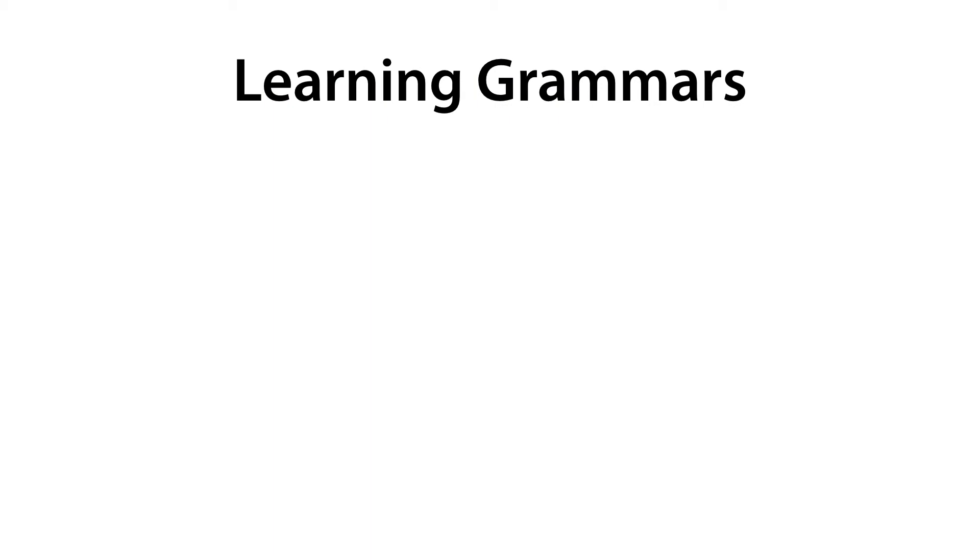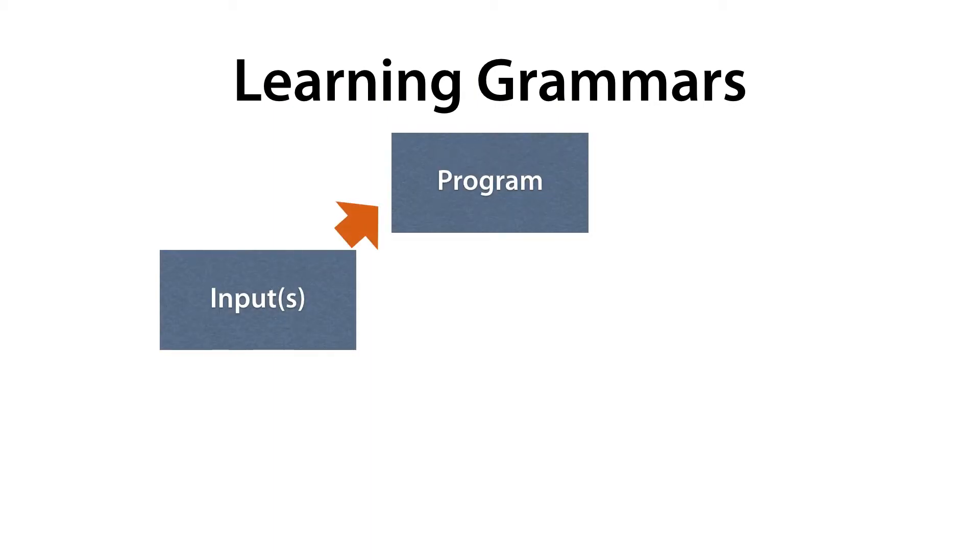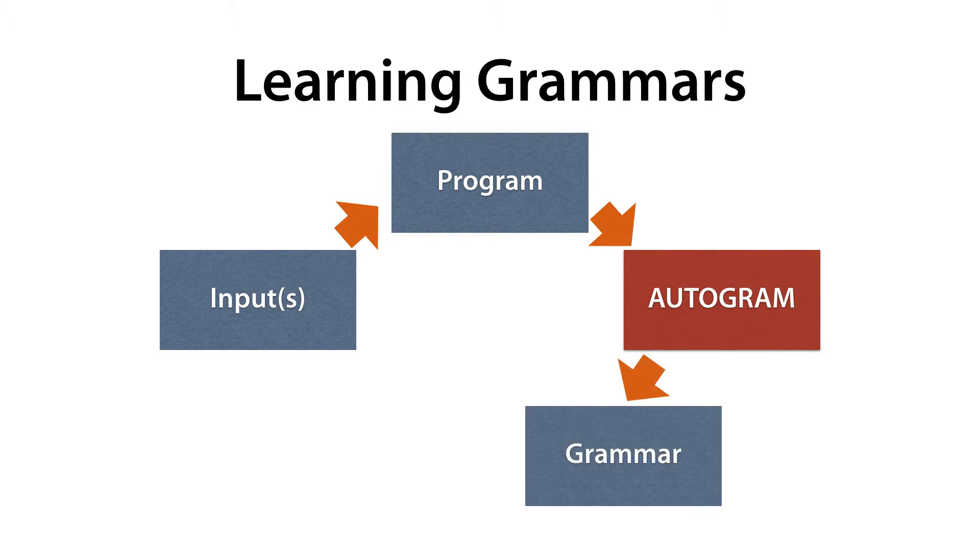The basic idea of Autogram is to observe how a program processes inputs by using dynamic taint analysis. By analyzing the taint traces, Autogram will then infer a context-free grammar that describes the structure of the inputs.